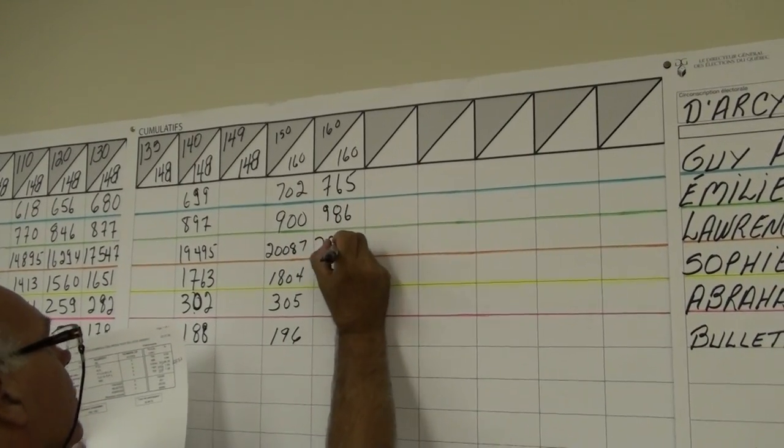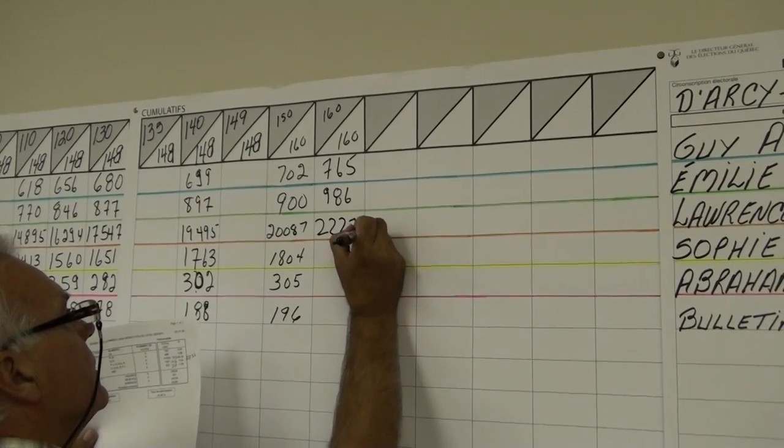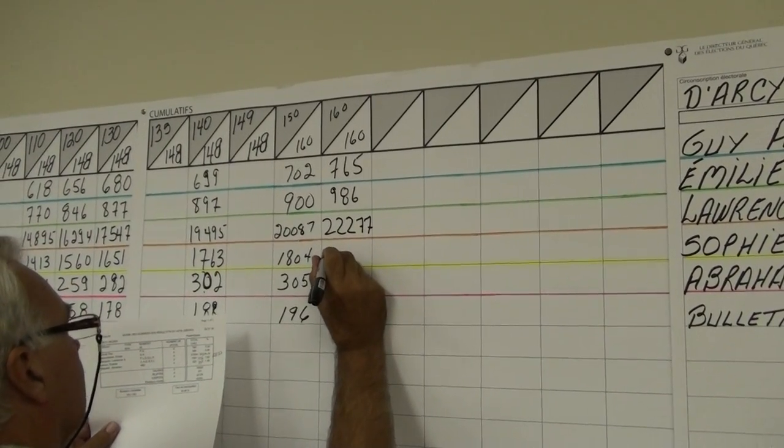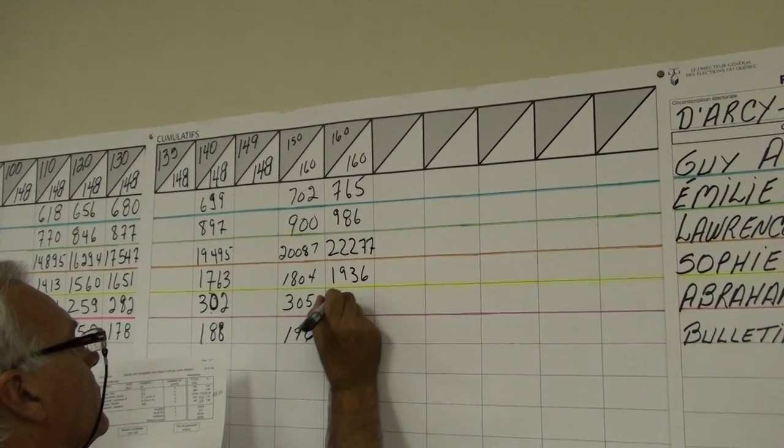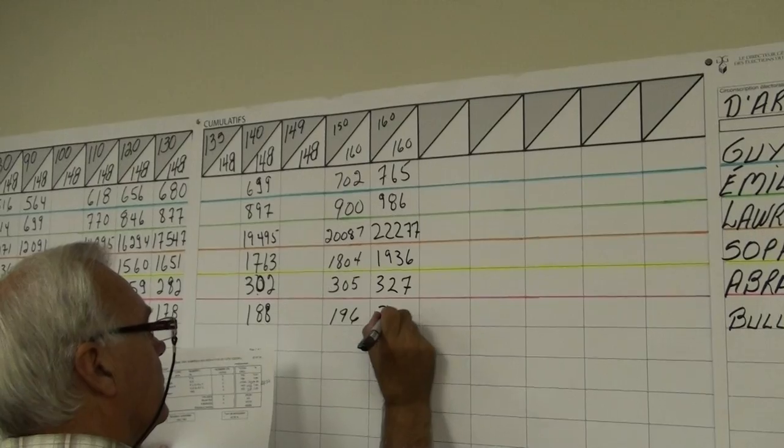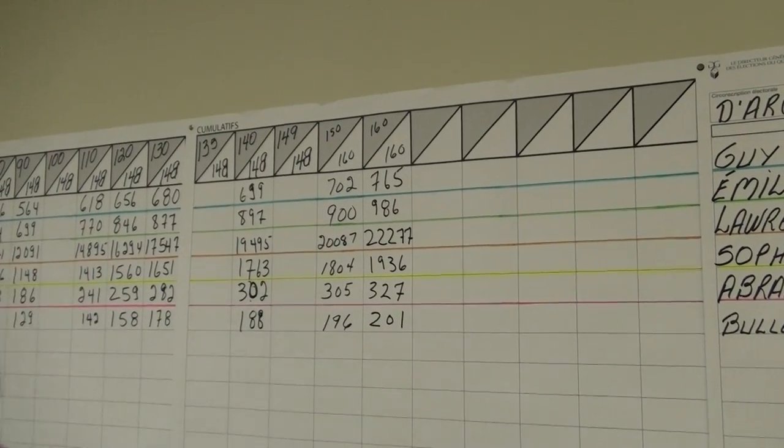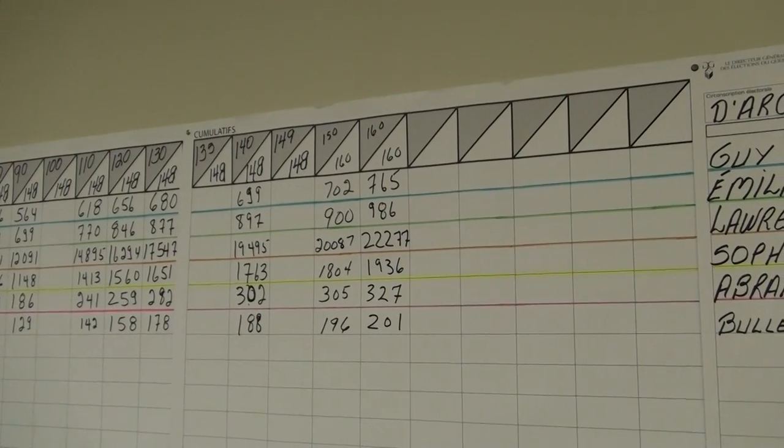765 Parti Québécois, 986 Quebec Solidaire. 22,267 votes for the Liberal candidate. Coalition Avenir Québec 1,936 votes and I'm 327 votes.